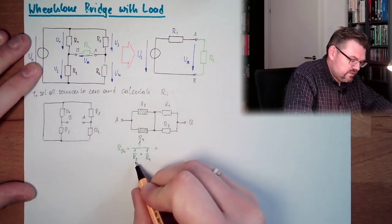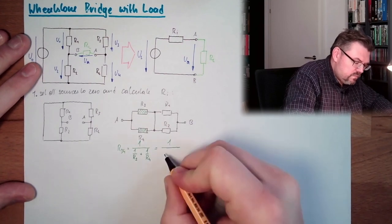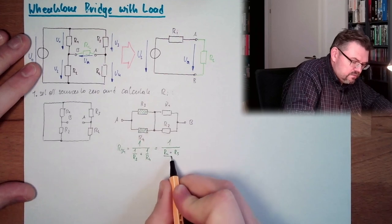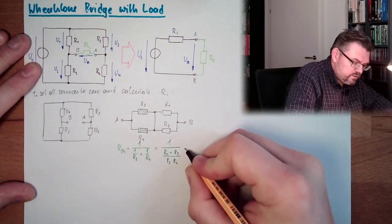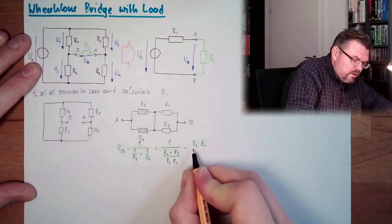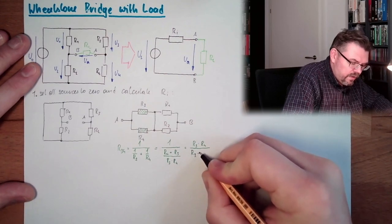Bring this to the same denominator: this is R4 plus R3, R3 multiplied by R4. So this is R3 multiplied by R4 divided by R3 plus R4.